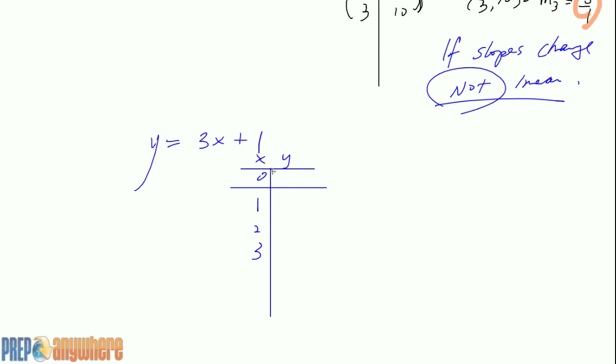0, 1, 2, 3. Zero it's 1, when it's 1 it's 4, when it's 2 it's 7, when it's 3 it's 10.